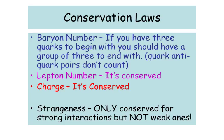Just recapping from the previous slide, the conservation laws that you're meant to be aware of. One is the baryon number. If you've got three quarks to begin with, you should have a group of three quarks at the end. Quark and anti-quark pairs don't count, because they cancel each other out. Lepton number is also conserved, so electrons have got a positive lepton number, and anti-electron neutrinos have got a negative number. Charge is also conserved, something that you should be very familiar with. Now strangeness is only conserved for strong interactions, but not for weak ones, so that's something that you need to be aware of. Okay, bye for now.